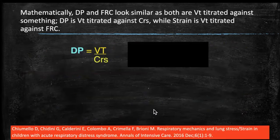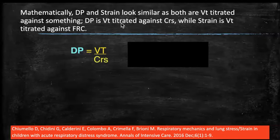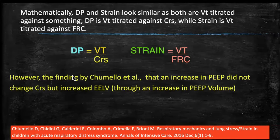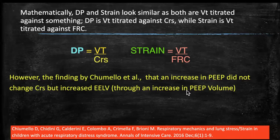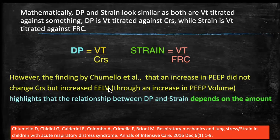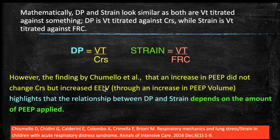This supports the concept that children react differently to inflammatory insults — inflammation, surfactant depletion, more elastin production compared to collagen production, and local edema explain differences between pediatric and adult lungs. Mathematically, driving pressure and strain look similar: driving pressure = VT / respiratory compliance, while strain = VT / FRC. The Chimula pediatric finding that increasing PEEP did not change respiratory compliance but increased end-expiratory lung volume suggests children had more tidal recruitment than true alveolar recruitment. The relationship between driving pressure and strain depends on the amount of applied PEEP — they are different entities.